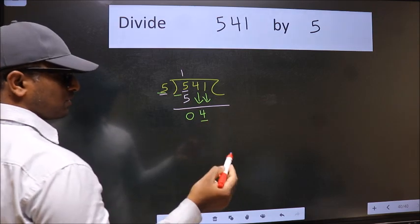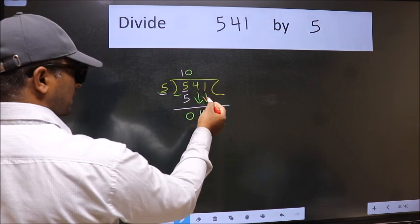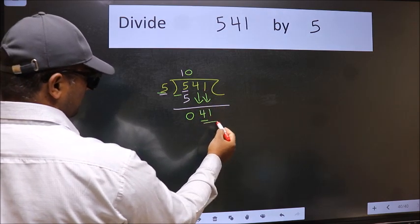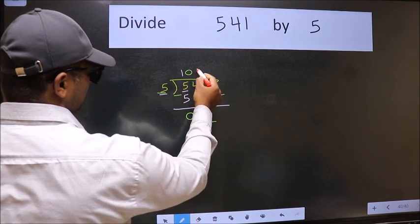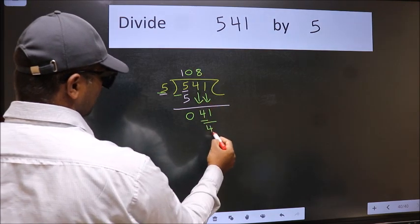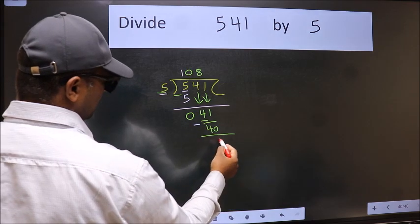The rule to bring down the second number is we should put 0 here. Then only we can bring this number down. Now we have 41. A number close to 41 in the 5 table is 5 times 8 equals 40. Now we should subtract. We get 1.